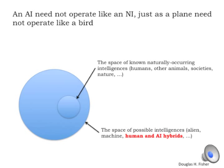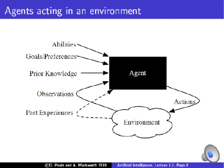If you look at those circles at the bottom, natural intelligence is what we can actually observe: humans, other animals, or societies of humans and animals — an ant colony, perhaps. The idea in artificial intelligence is that these may be a very small part of the space of all possible intelligences, represented by that other circle — alien intelligences, machine intelligences, and in particular this notion of human and AI hybrid intelligences. We don't even know what those can look like, but we think they might be quite powerful.